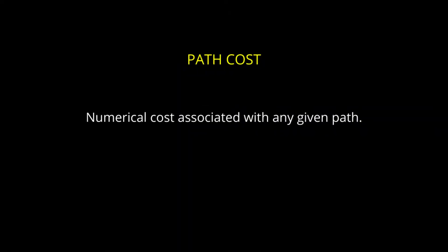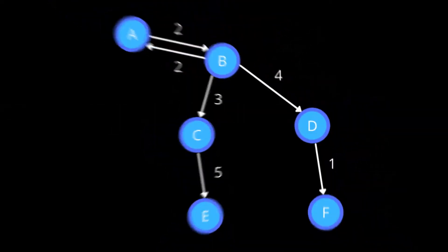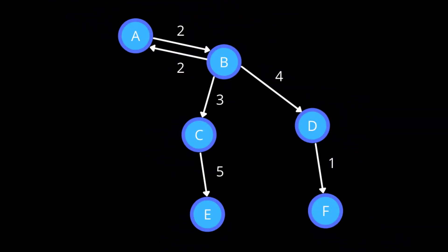The numerical cost associated with any given path is called path cost. Path cost is the sum of costs of individual actions along the path. This is a graph which includes some states and some actions to get from one state to another. The path cost of the path from state A to state E is equal to 10, and the path cost from state B to state F is equal to 5.